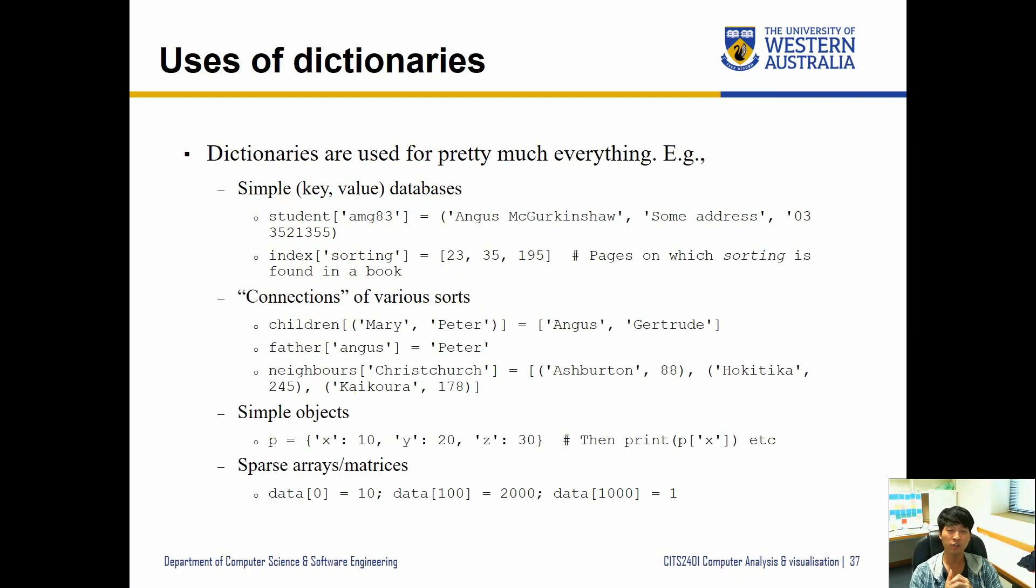So when will you actually use dictionaries? As mentioned before, there's quite a lot of applications where you can apply dictionaries into context, but here's some common examples. So you have a simple key value databases, like you have student ID and the details of the students are stored as a tuple. So you can create a dictionary of that, then by just inquiring about student ID you can retrieve the student information quickly, right? Indexing of some sort.